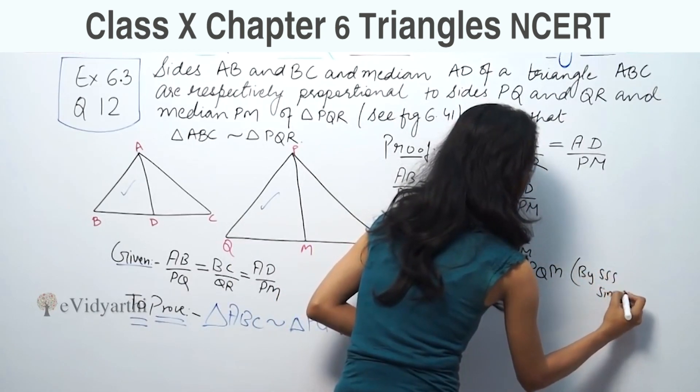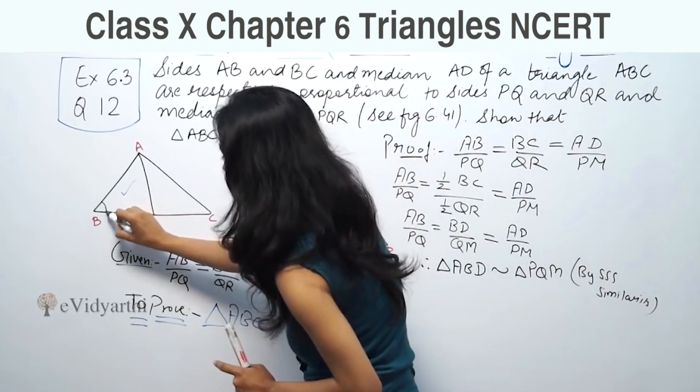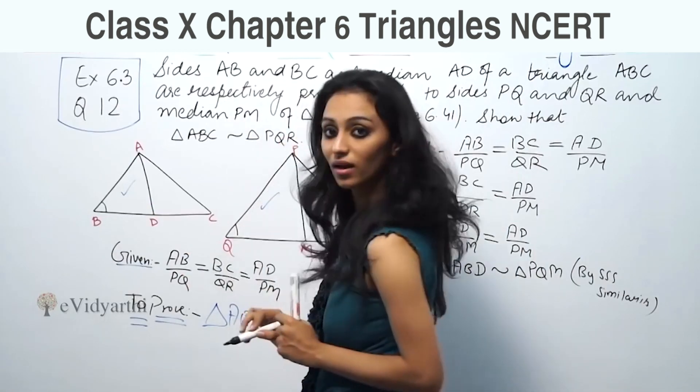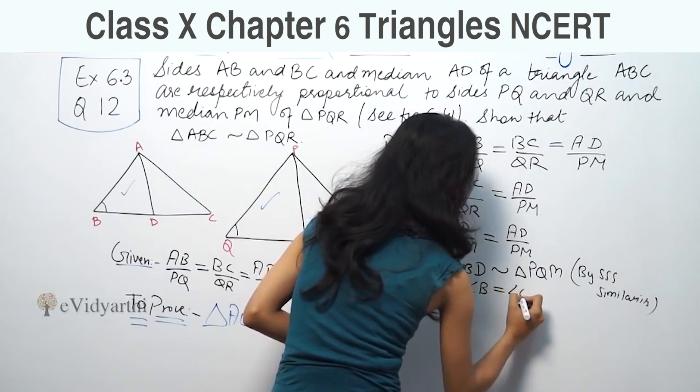So if triangles ABD and PQM are similar by SSS, then angle B equals angle Q.